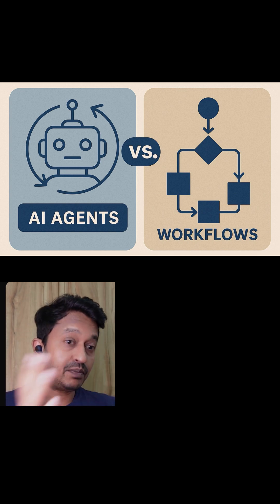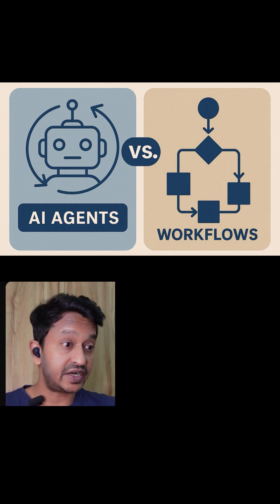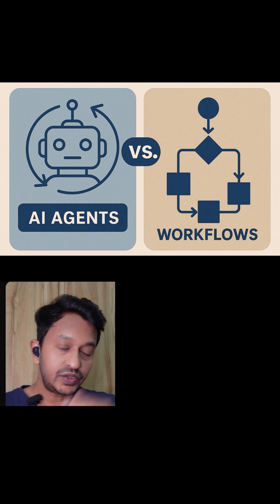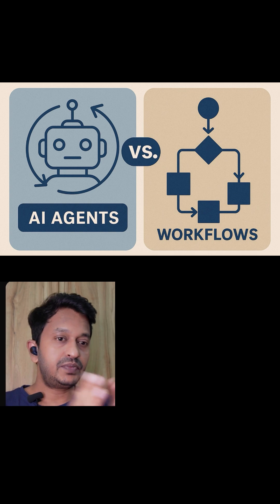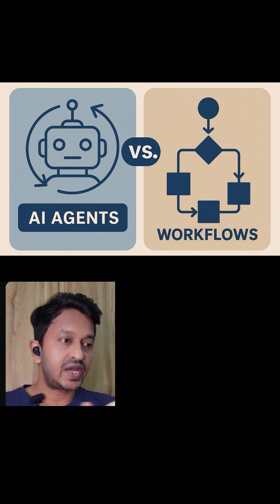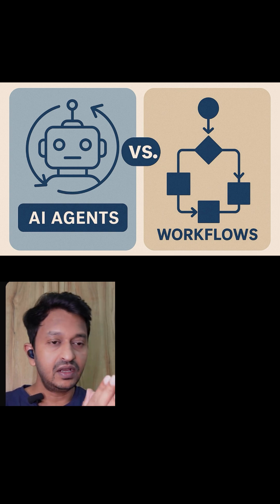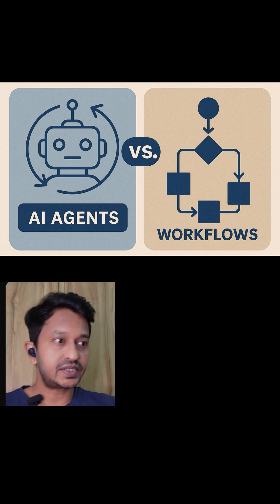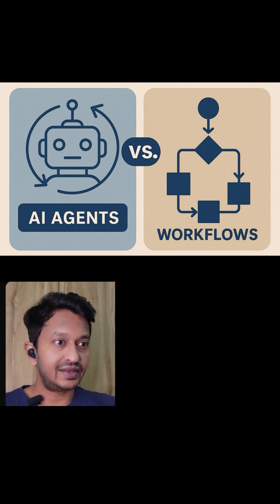That is where AI agents are much more dynamic — nothing is predefined. They can choose autonomously what tools to use and plan independently. Whereas in AI workflows, everything is very much predefined. Workflows are like: do this, then this, then this — a fixed path, perfect for repetitive tasks where you want consistency and reliability, like automating email responses, data processing, and content generation. You design the exact steps ahead of time.